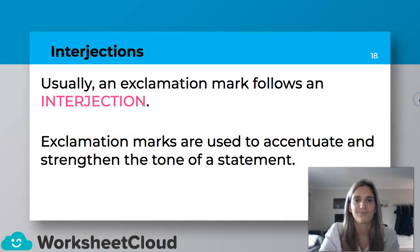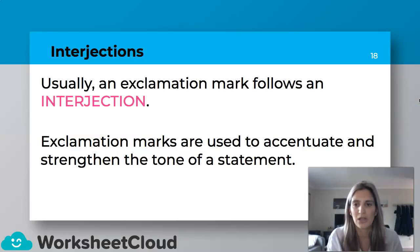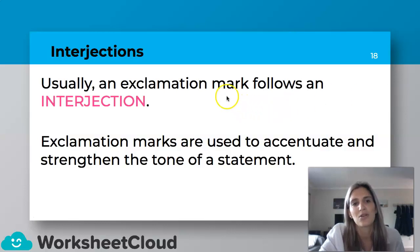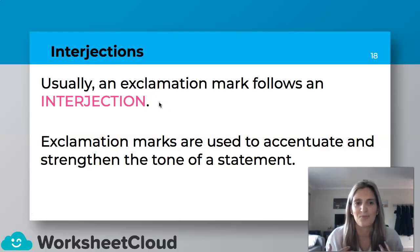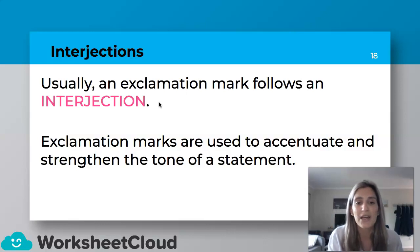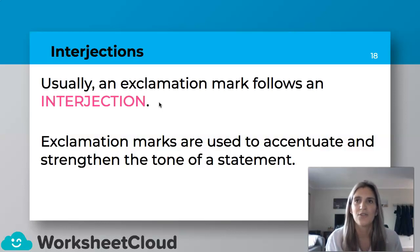If you noticed in our previous examples, most of them — actually all of them — had an exclamation mark. Usually an exclamation mark follows an interjection, because we need that strengthening. Exclamation marks are used to accentuate and strengthen the tone of a statement. So instead of saying "Hooray, I'm going on a summer holiday" flatly, you add an exclamation mark to give it that emphasis and tone: "Hooray! Yay!"